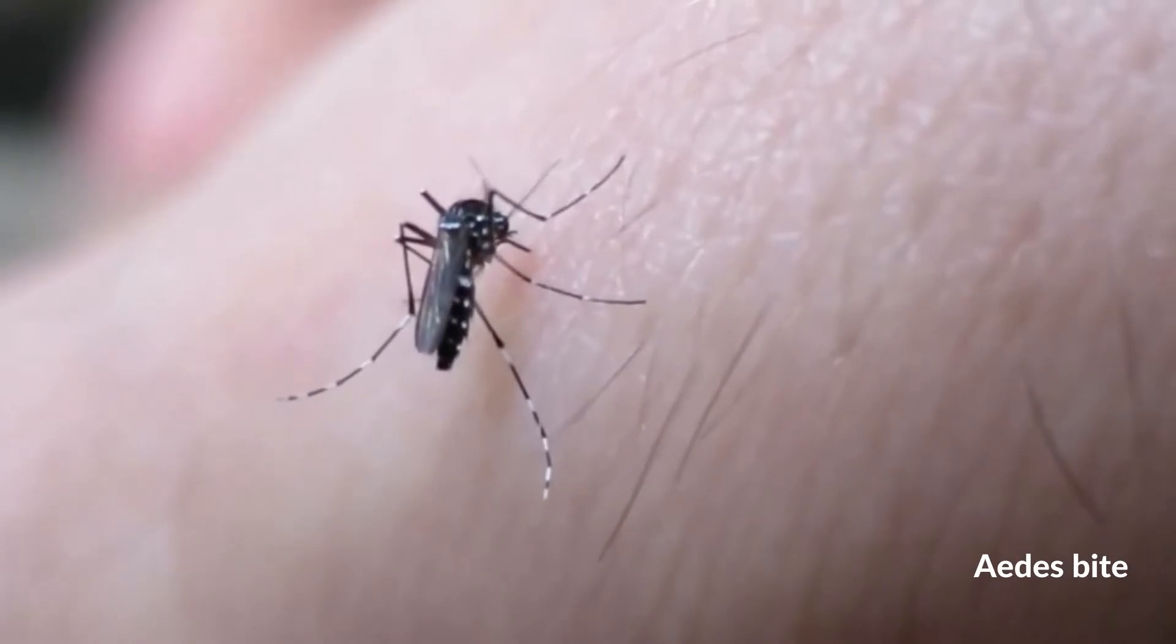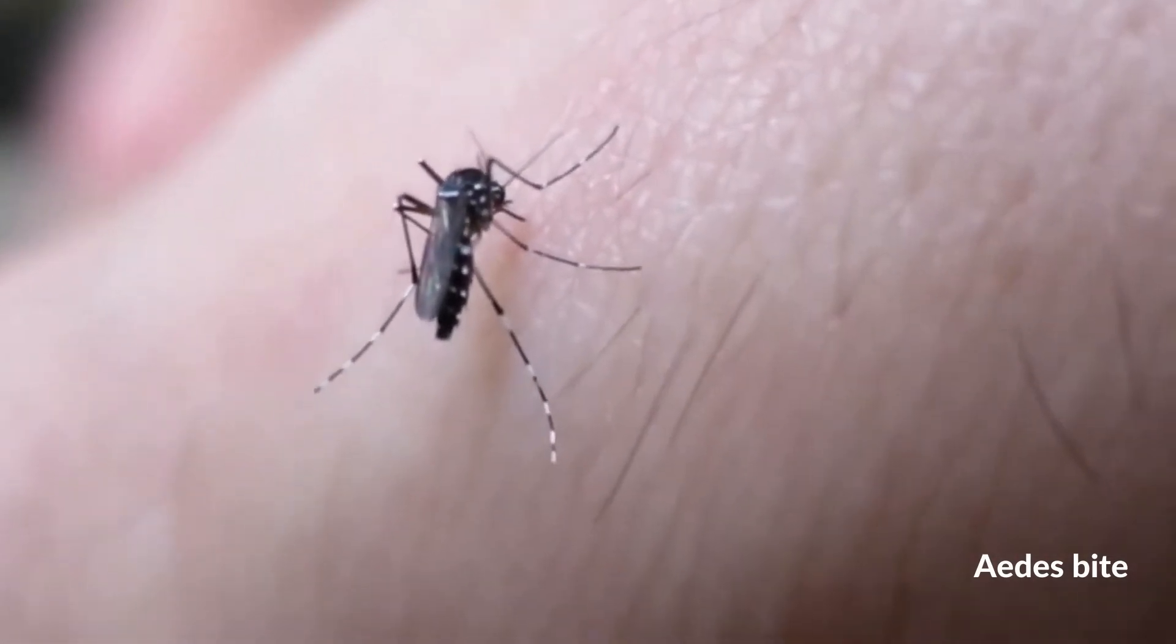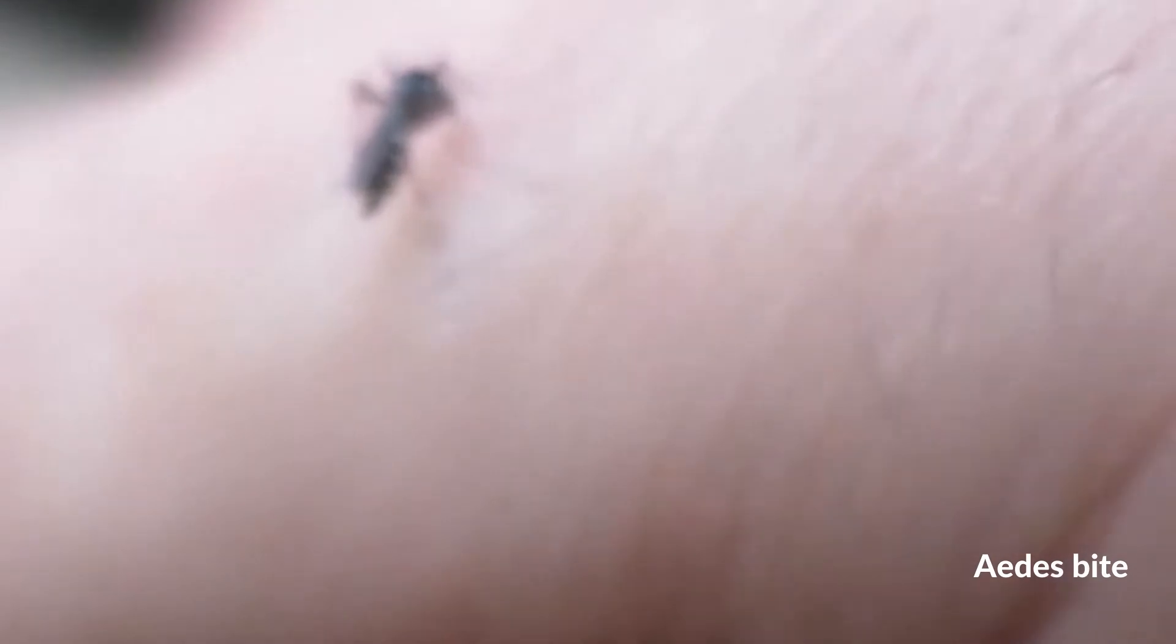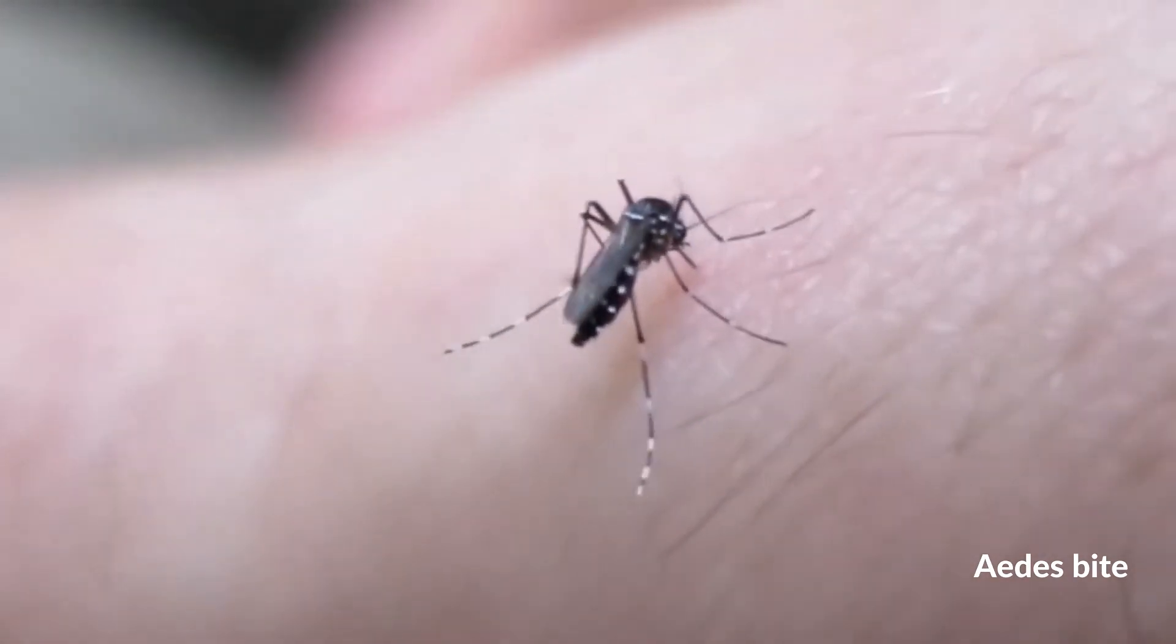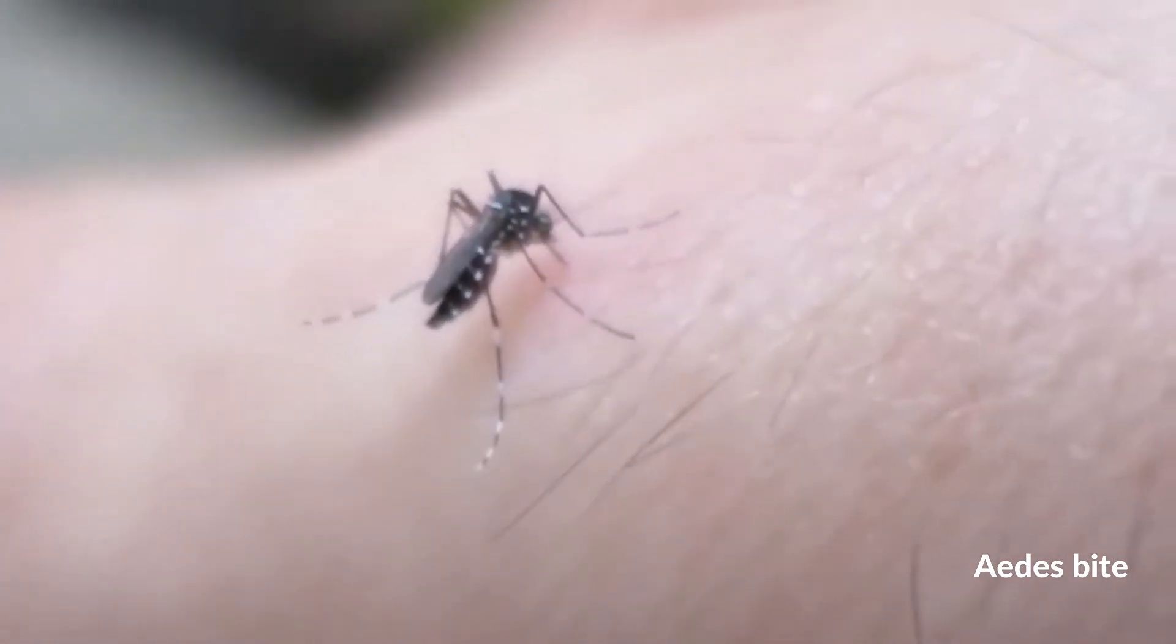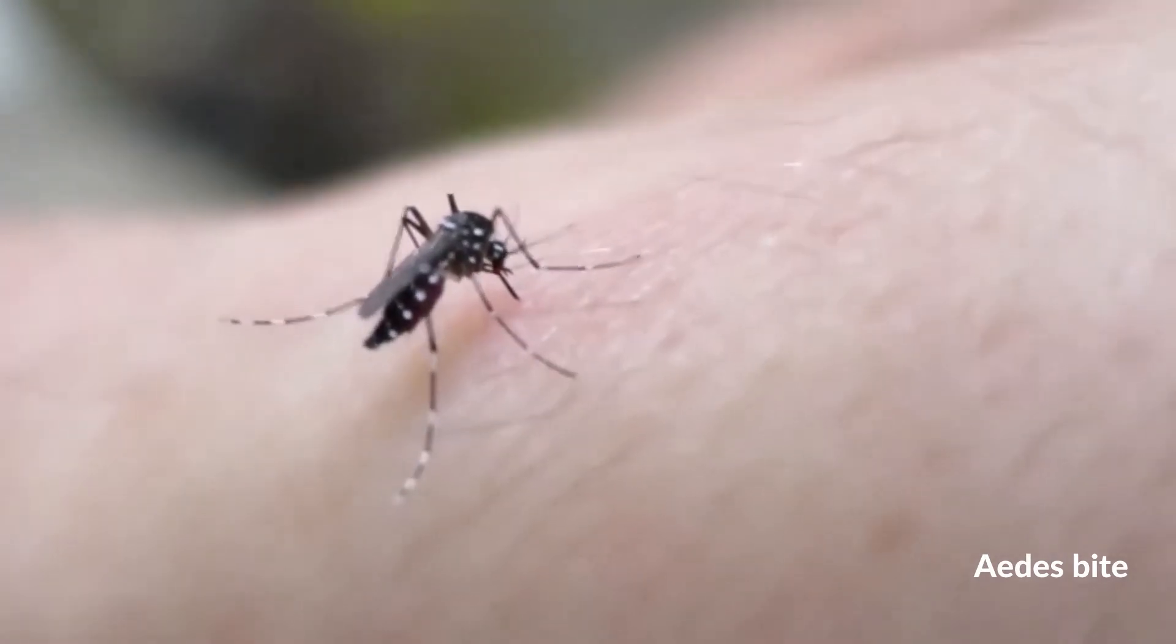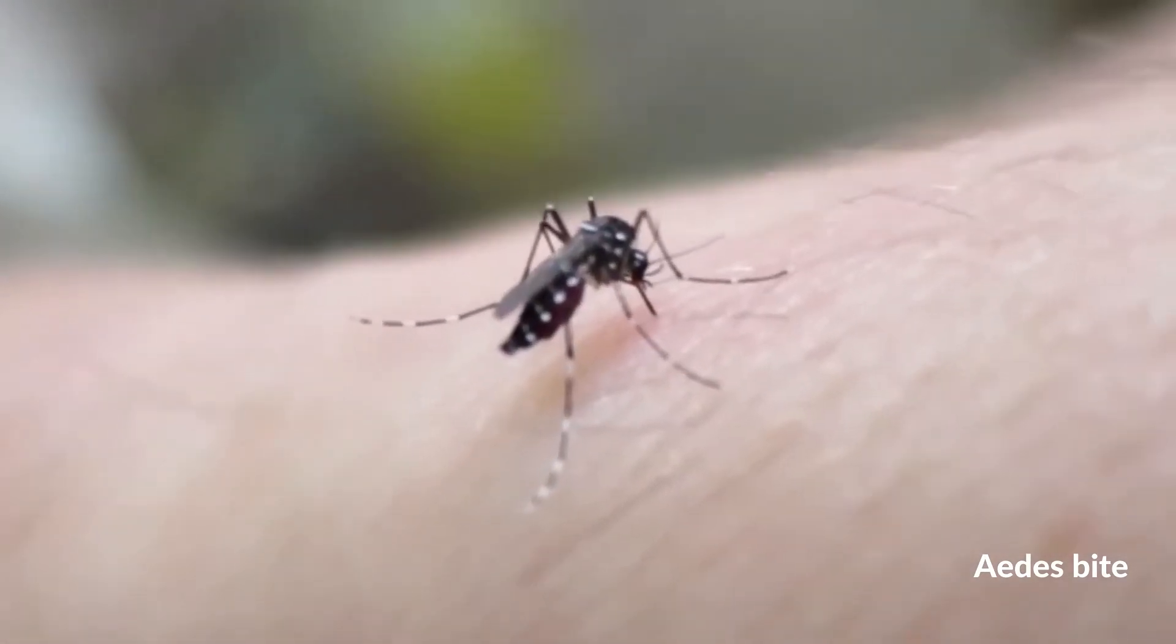Aedes aegypti strike during the day. Aedes aegypti are becoming resistant to insecticides and love your home just as much as you do. They are highly invasive and have a proboscis by which they suck blood.